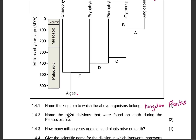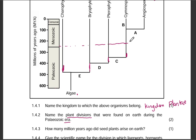Name the plant divisions found on Earth during the Paleozoic era. The Paleozoic era is here on the diagram, and this is where it ends. The plant divisions found during this era are: first, the Charophytes, then the Bryophytes, then the Pteridophytes, and then the Gymnosperms — all in the Paleozoic era.